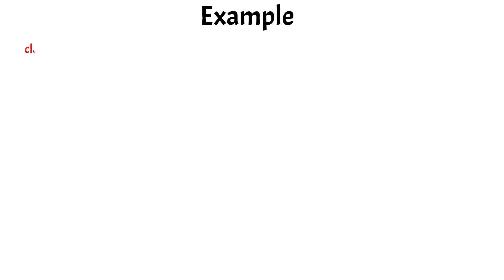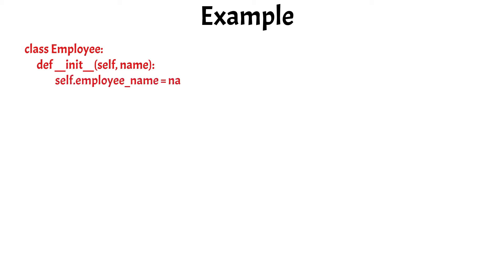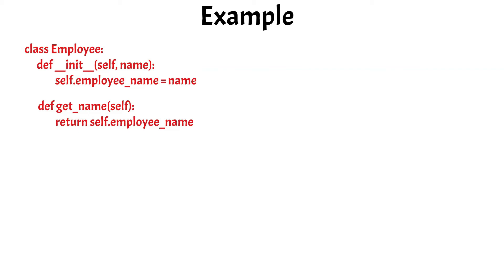So we can write: class Employee, and then we can write the constructor of the class, which takes the name of the employee as the input, and assigns it to the instance variable self.employee_name. Let us also create an instance method which will fetch the name of the employee for us. So we can write: def getName, and we can simply return the name of the employee.